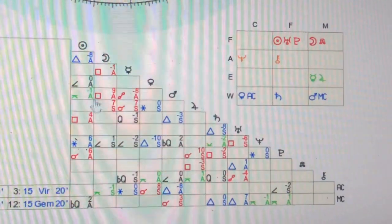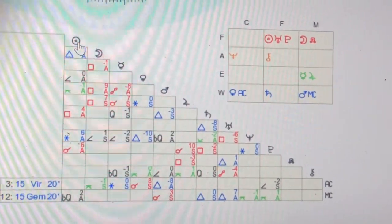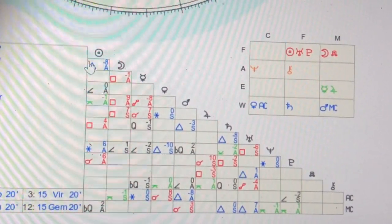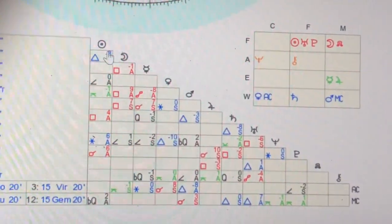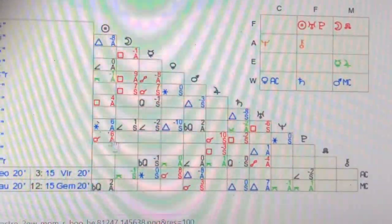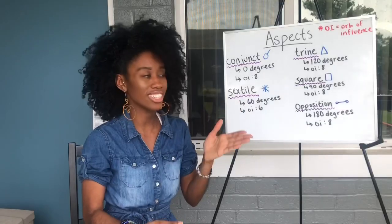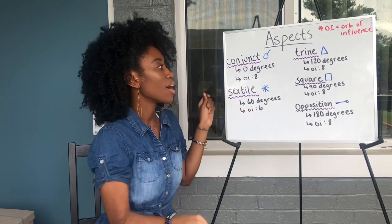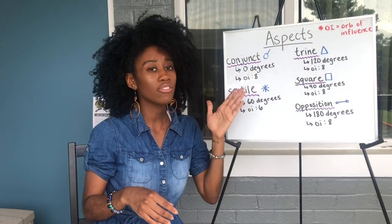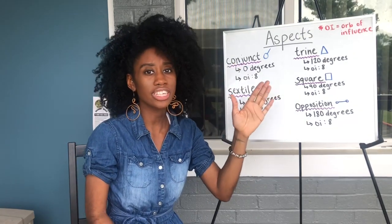Let's talk about how to use this chart. It works kind of like a multiplication grid. Say I want to know what aspects my Sun has — my Sun is trine my Moon, my Sun is square Saturn, my Sun is conjunct Pluto. Conjunct — the symbol is in blue. Conjunct is zero degrees, so these are planets that are right next to each other. The OI is 8, which means planets can be no more than eight degrees away from each other to be conjunct.